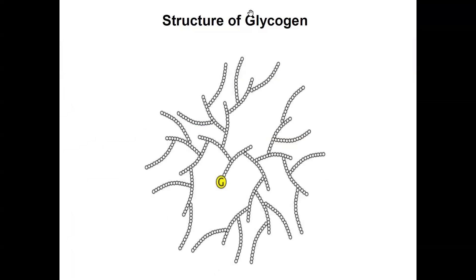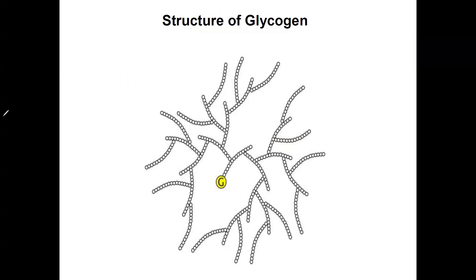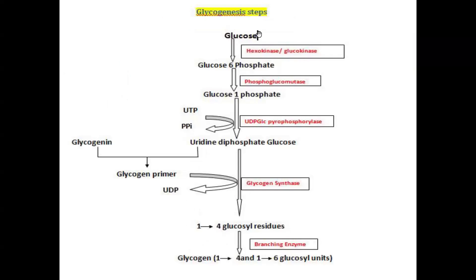Glycogen is made up of both linear and branched chains. The linear chain of glycogen is made up of alpha-1,4 glycosidic bonds. The steps of glycogenesis begin with glucose, which is converted into glucose-6-phosphate by the enzyme hexokinase or glucokinase.